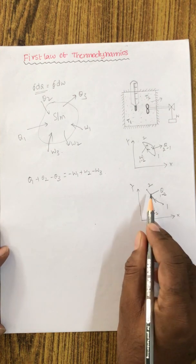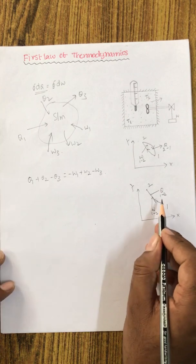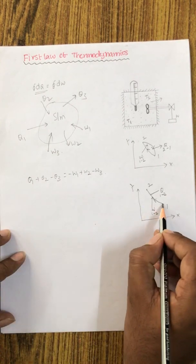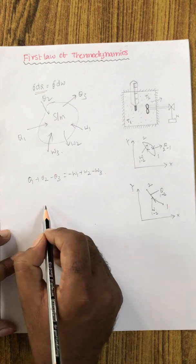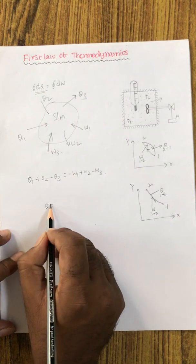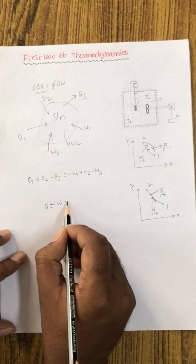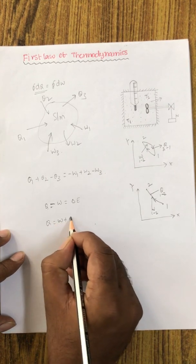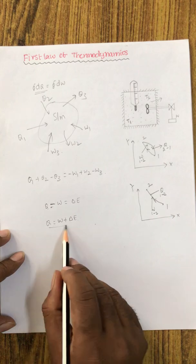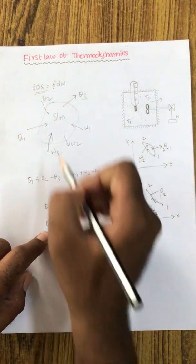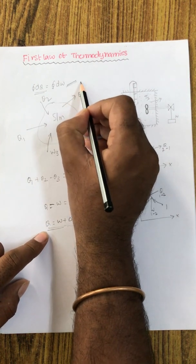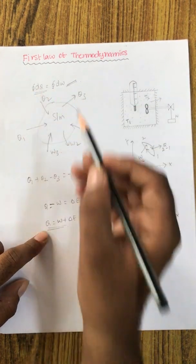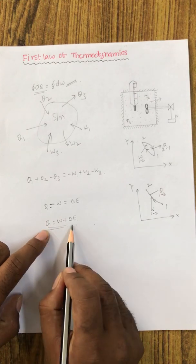When a process takes place from state point 1 to state point 2 involving both heat and work transfer, the net energy is stored in the system, which is called internal energy or simply the energy of the system. The equation becomes: Q minus W equals the change in internal energy, or Q equals W plus delta E. This is the first law of thermodynamics for a process, while the cyclic integral form is the first law for a cycle.